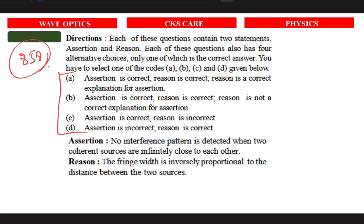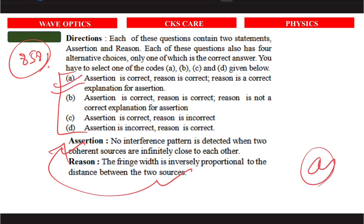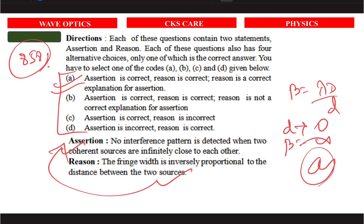No interference pattern is detected when two coherent sources are infinitely close to each other. When sources are very close, the fringe width β = λD/d — as d approaches 0, β approaches infinity. So the fringe width becomes infinite and no pattern is visible. Both statements are correct; the answer is A.